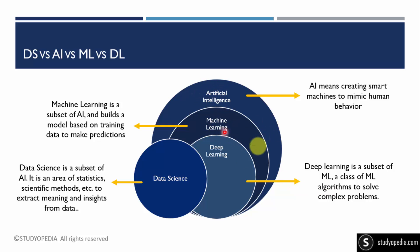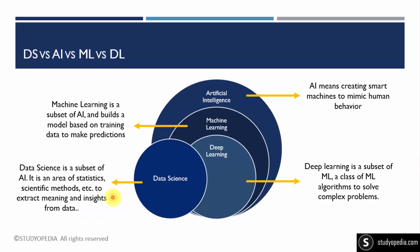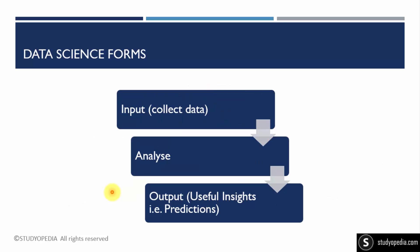Deep learning is a subset of machine learning and includes its complex algorithms. You can relate this with neurons — just like neurons in our body, when we view four animals, two cats and two dogs, our brain neurons map and give a decision. Data science is also a subset of AI — it's an interdisciplinary area covering statistics, scientific methods, and data analysis to extract meaningful data.